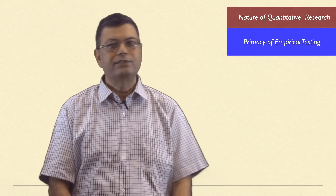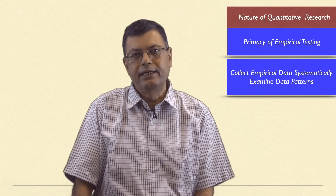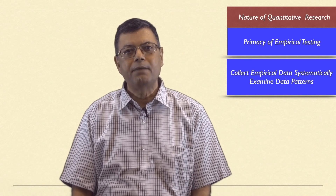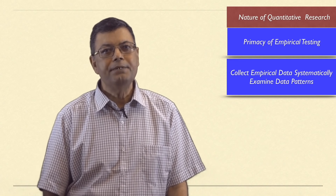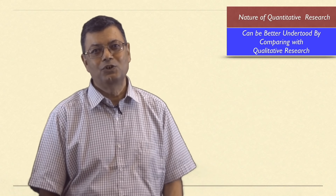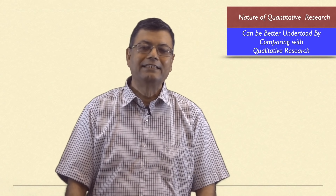If I have to summarize what I have said so far, it can be safely asserted that in all research, we strive to collect empirical data systematically and to examine data patterns so that we can better understand and explain social life. This can be accomplished by employing two different approaches: quantitative and qualitative. In my earlier lecture in this induction program, I explained the qualitative research approach. The focus of quantitative approach can be better understood if we dwell a little on how they differ in respect of collection of empirical data and examination of data patterns.